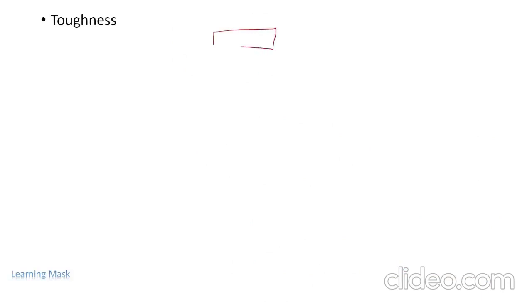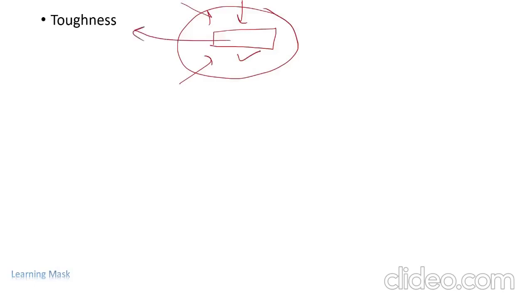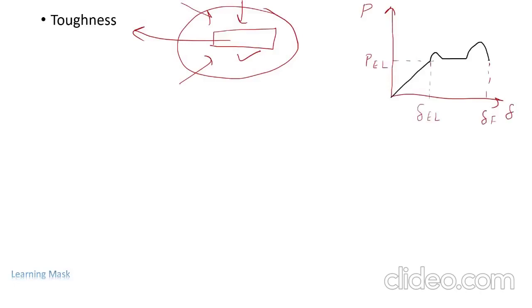The next property is toughness. Toughness is defined as the property of a material which enables it to absorb energy without fracture. The energy absorbed by the material before fracture is known as toughness. To understand this, consider a graph between load (P) and elongation (delta L). EL is the elastic limit and F is the fracture point. The energy absorbed by the material up to the fracture point is known as toughness. Next, we will discuss hardness.